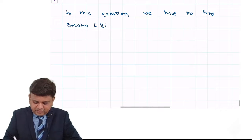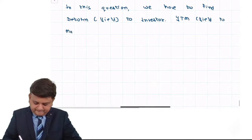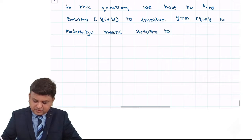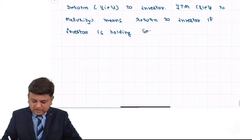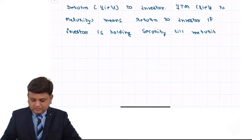We need to find the return — also called yield — to the investor. Full stop. YTM, yield to maturity, means the return to the investor if the investor is holding the security till maturity.